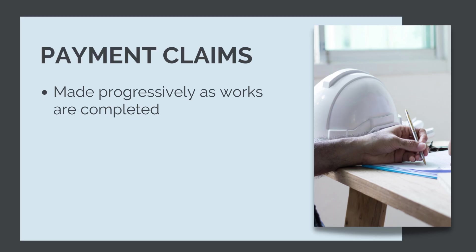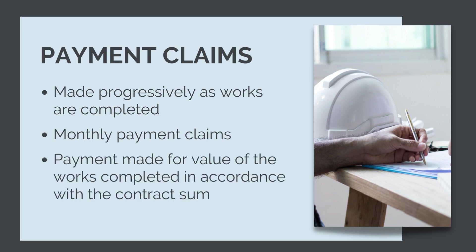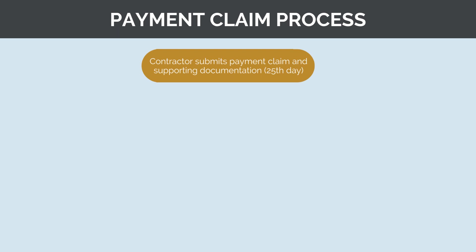Payment claims are made progressively as the contract works are completed. Imagine a $5 million one-year contract — as the contractor, you wouldn't be happy to receive a lump sum in one year's time when all your labour, plant and material costs are paid weekly. Furthermore, what happens if the principal goes broke before you get paid? Payment claims occur monthly, and the amount paid is the value of works completed in accordance with the contract sum. The payment claim process begins with the contractor submitting a payment claim, filling out the pricing schedule with their assessment of how much work they have completed up to the end of that month.